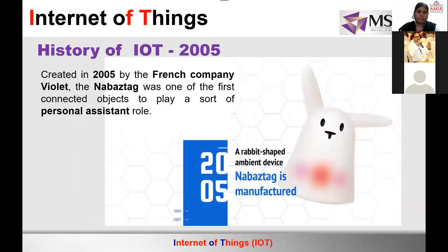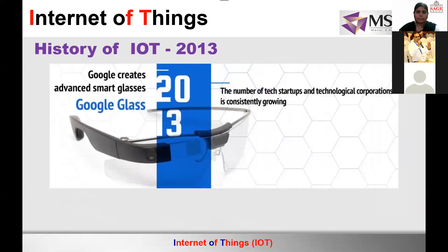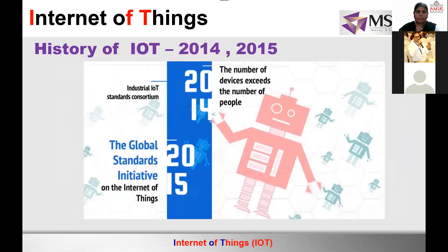In 2005, the first personal assistant device appeared. Today we have Alexa, Siri, and many others. The journey continued with the Google car, Google glasses, and many more. Statistics from 2014 showed the number of devices exceeding the number of people. Today, one person has at least two devices. At any home there is a smart TV, laptop, and cell phones — all connected to the internet. The number of devices keeps increasing while the process continues to grow.